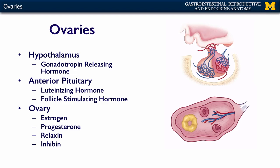The ovary is an endocrine organ within the hypothalamus-anterior pituitary cascade. The hypothalamus secretes gonadotropin-releasing hormone, or GnRH, into the anterior pituitary. The anterior pituitary makes two hormones: luteinizing hormone (LH) and follicle-stimulating hormone (FSH). These are secreted from the anterior pituitary and act on the ovary. In turn, the ovary secretes into circulation: estrogen, progesterone, relaxin, and inhibin.